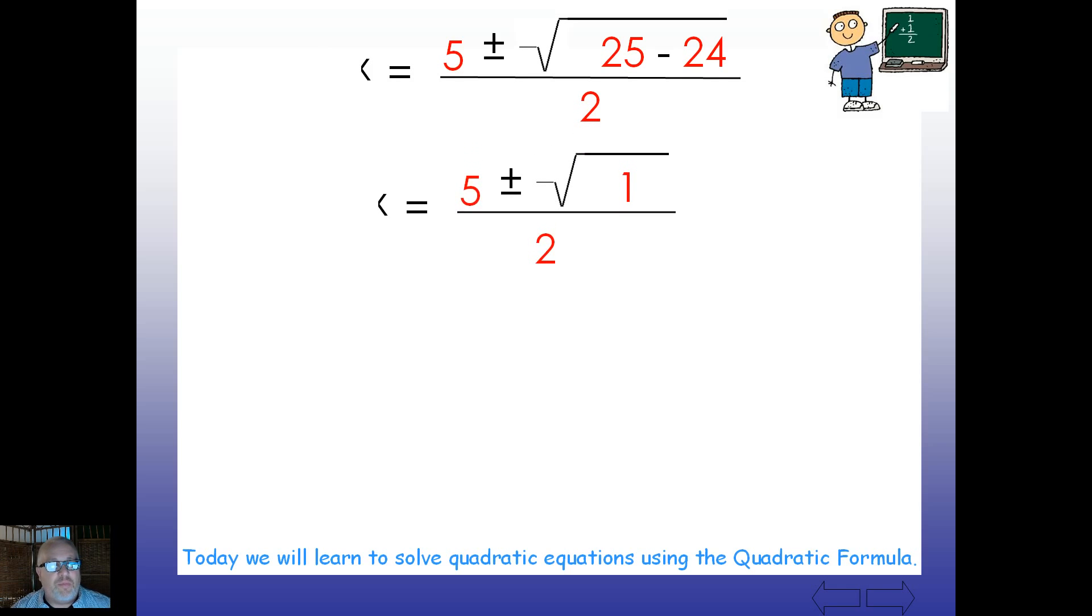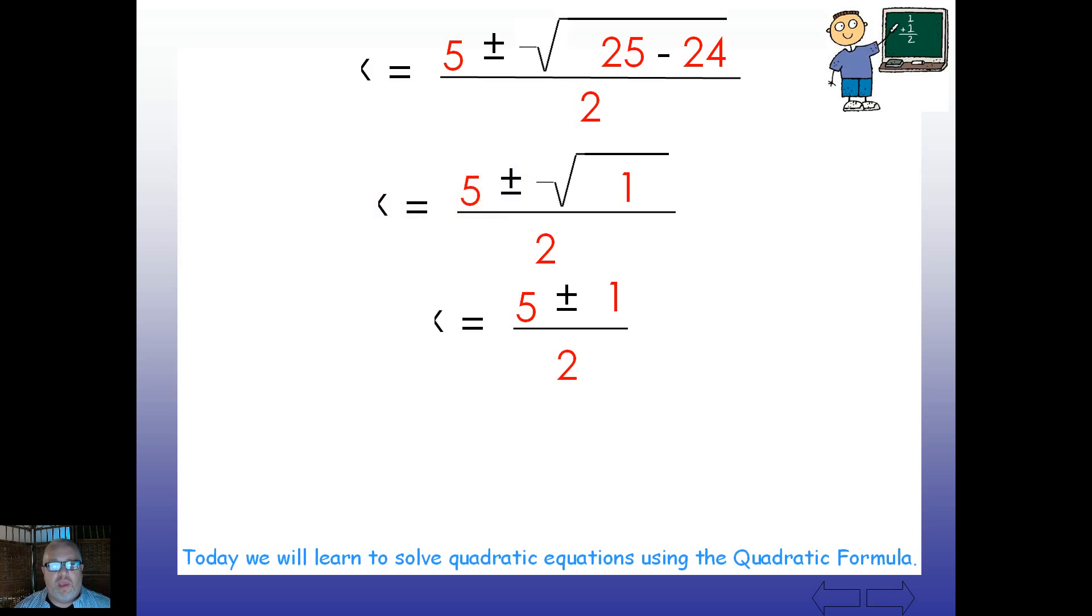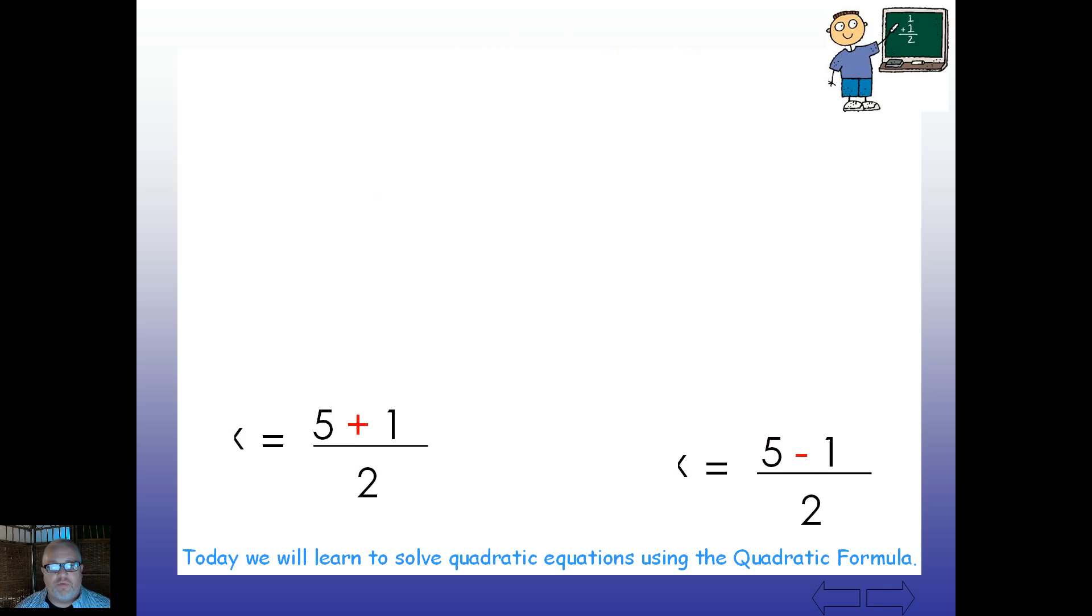So let's clean this up a little bit. And we end up with 5 plus or minus the square root of 1 over 2. What is the square root of 1? Well, we know that's going to be plus or minus 1. You've got 5 plus or minus 1 over 2. Do those two simple equations back and forth. And we end up with 5 plus 1 over 2, 5 minus 1 over 2. And streamline that down to your answer.